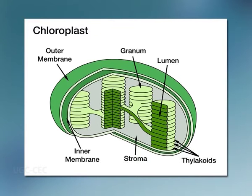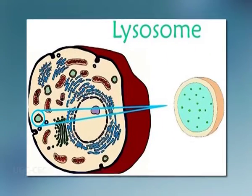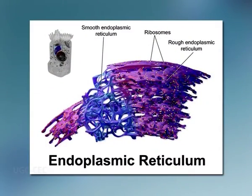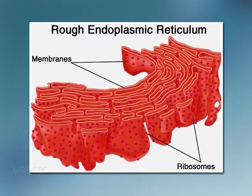Chloroplasts, also known as plastids, are surrounded by a double membrane containing stacked thylakoid membranes, which are responsible for photosynthesis. Lysosomes are membrane-bound organelles present in eukaryotic cells, responsible for degrading proteins and membranes in the cell and also helping to degrade materials ingested by the cell.